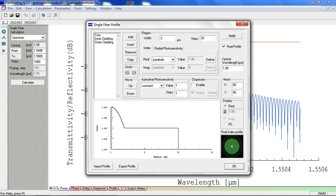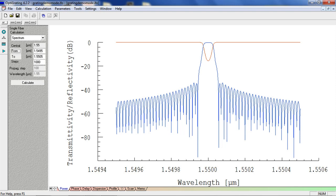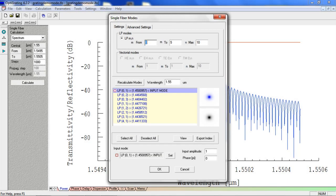Materials can be lossless with real refractive index. The materials can also be lossy with complex refractive index. After entering the profile definition, one can solve for the modes. We can access the mode solver by clicking the single fiber modes button.